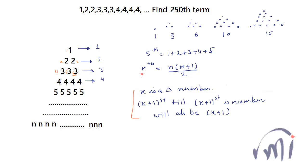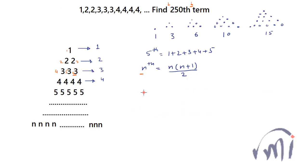We know the nth triangular number is n multiplied by (n+1) divided by 2. So what I will do is find both triangular numbers closest to 250 — the first one smaller than 250 and the second one bigger than 250. The 250th term will have the value equal to n, where the nth triangular number is the closest but bigger than 250.